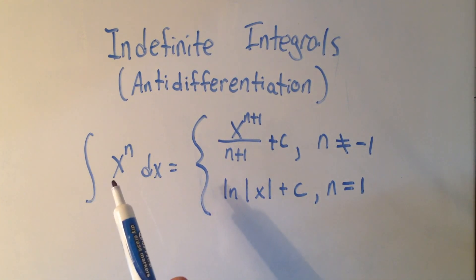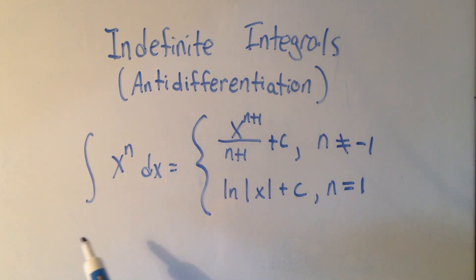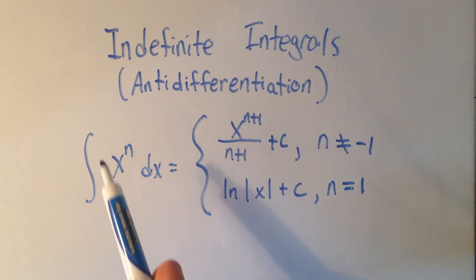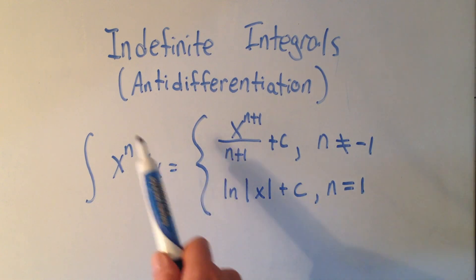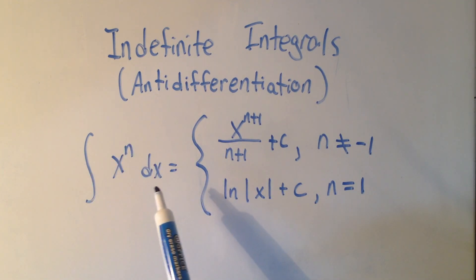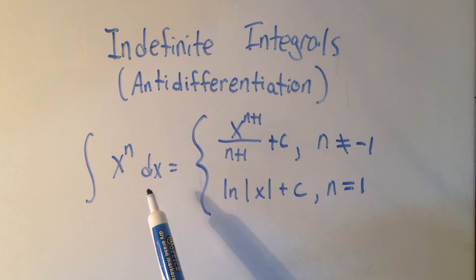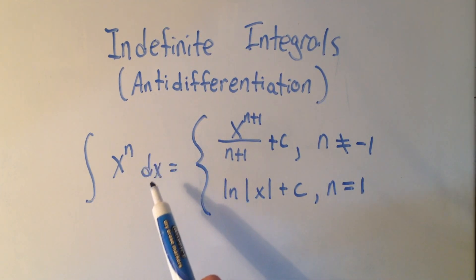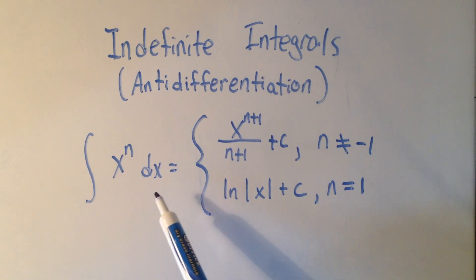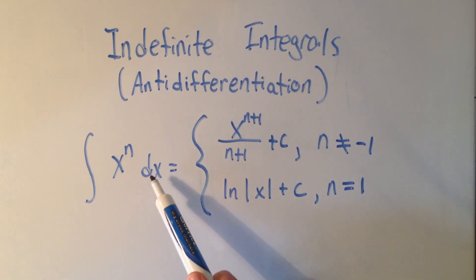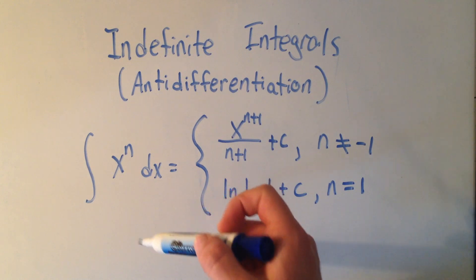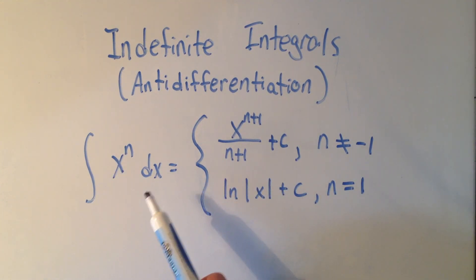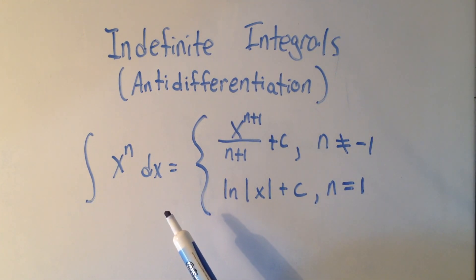When you want to do an integral, we use this long S — this is the integration symbol, and it says integrate whatever's in here. And you'll notice this dx, which means a very, very small quantity. It's basically going to be a notational thing, but it is important that it's there. So what this says is: integrate x to the n with respect to x.